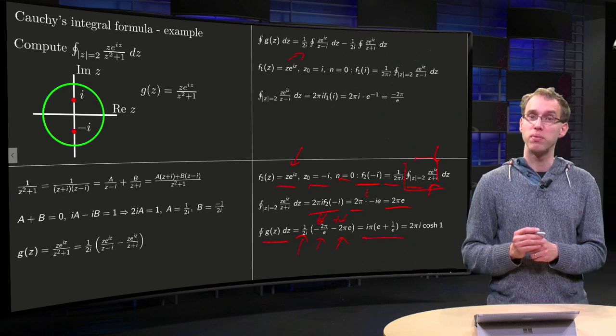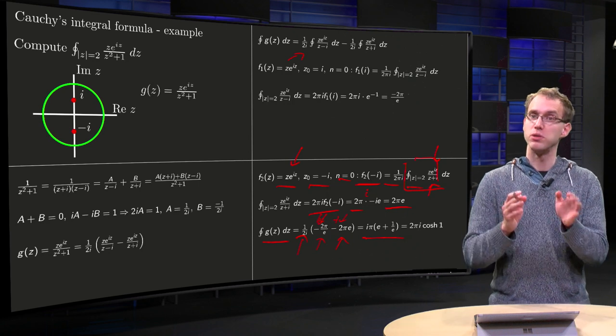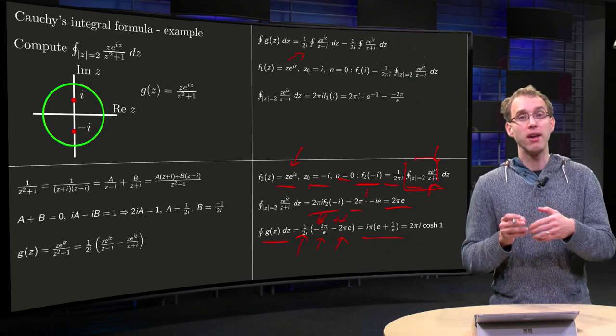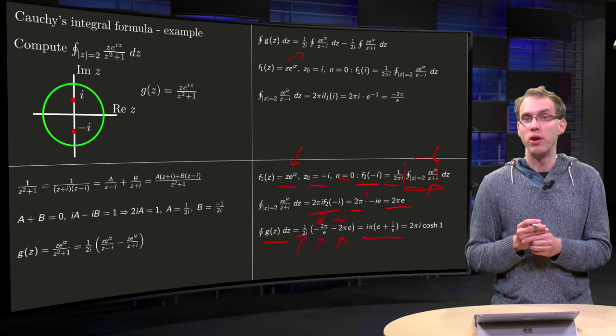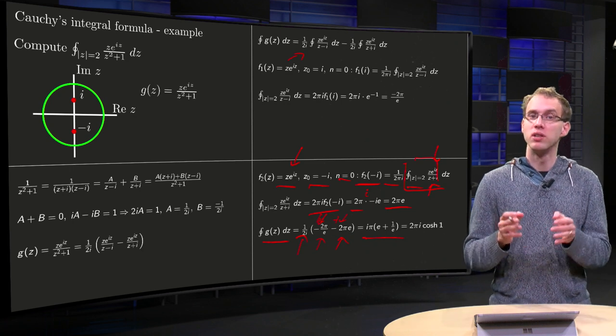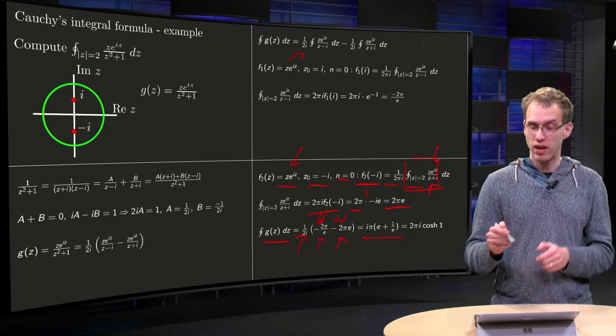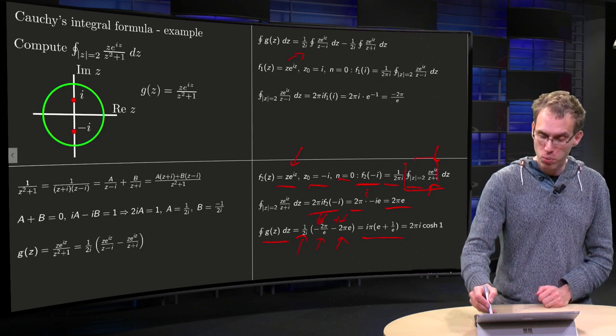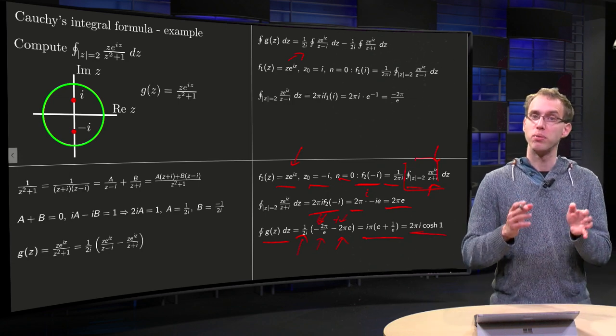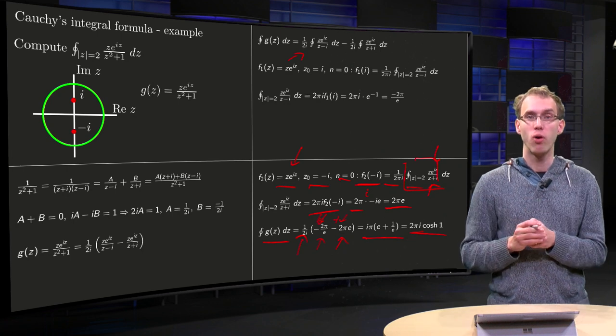Take out the factor of π, so you get i times π times (E + 1 over E), and you can simplify that if you want, not necessarily, but you can observe that this is exactly twice the hyperbolic cosine of 1, so the final answer will be 2πi·cosh(1).